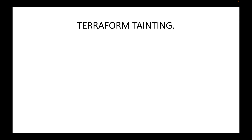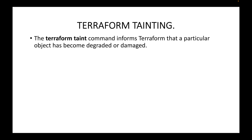In this session we will look at an introduction to Terraform taint. Terraform taint can be used whenever you want Terraform to replace any object or resource that has been damaged or degraded. For example, if you have an EC2 instance launched by Terraform and that server is corrupted or damaged, and you want Terraform to replace it or launch a new resource, you can make use of the Terraform taint command.